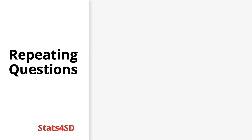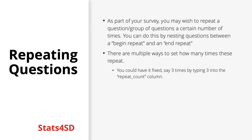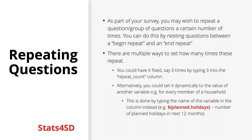Similar to grouping questions, you can also repeat questions. For any reason you may wish to repeat questions a given number of times, you can do this by nesting questions between lines saying 'begin repeat' and 'end repeat' in the type column, much like question groups. There are multiple ways to set how many times questions should repeat. You could have it fixed — say three times — by typing 3 into the repeat count column. However, it is more common to want questions to repeat depending on an answer to an integer question, such as asking a set of questions about every member of a household, using the variable name in the repeat count column with dollar and curly brackets.